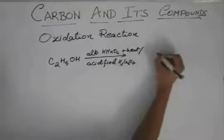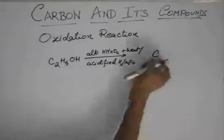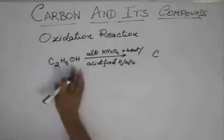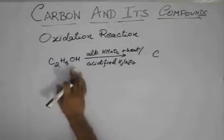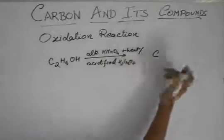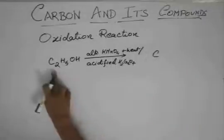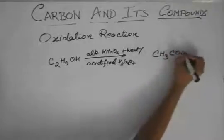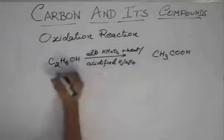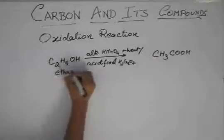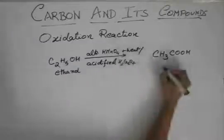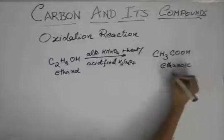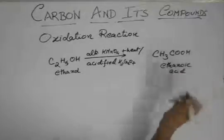It will give the corresponding acid without changing the number of carbon atoms. That is, it will just add an oxygen atom and remove two hydrogen atoms. So this ethanol will become CH3COOH. This ethanol will change to ethanoic acid.